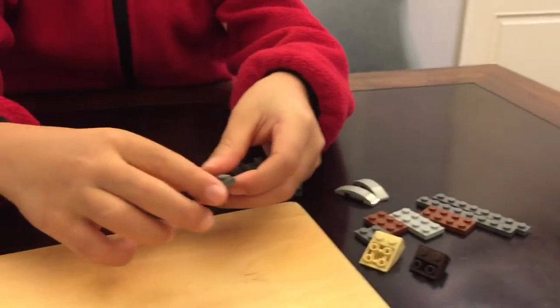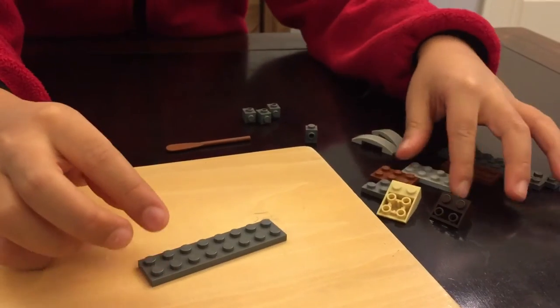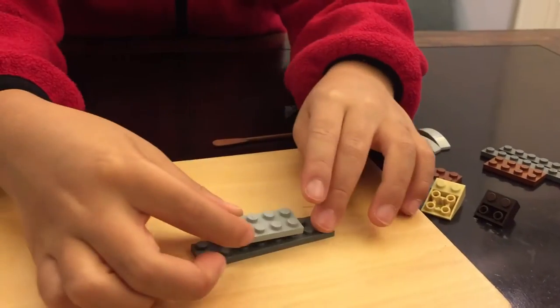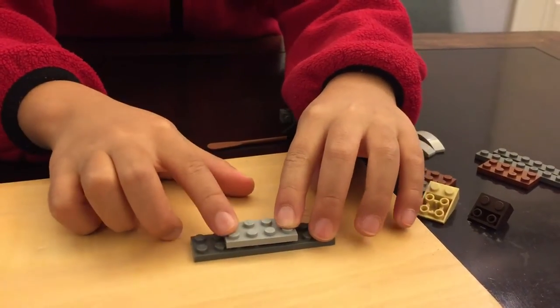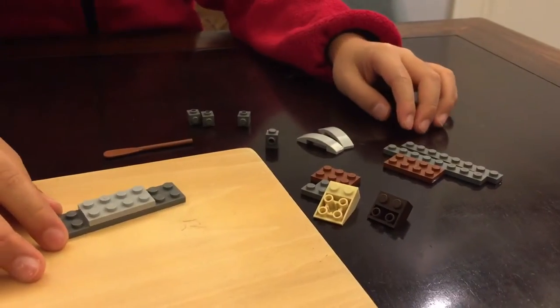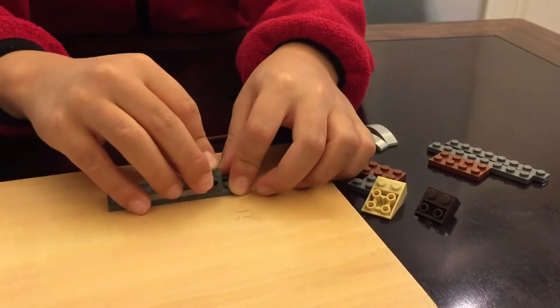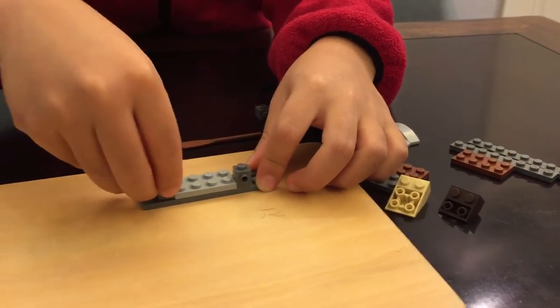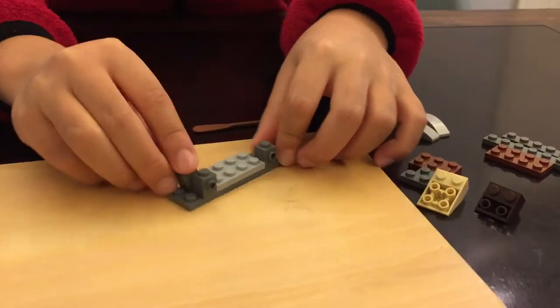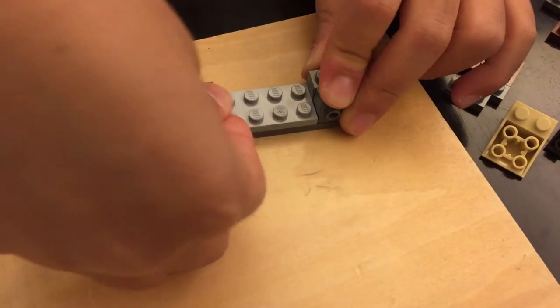So first you will get this Lego platform. Then you will put this 4-studded block on. After that you'll put these blocks on both sides.